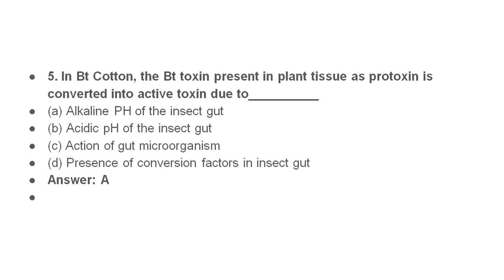In Bt cotton, the Bacillus thuringiensis toxin is present in plant tissue as a protoxin, which is an inactive form. When insects consume the plant, the toxin is activated in the insect's gut due to the alkaline environment.